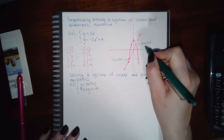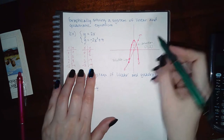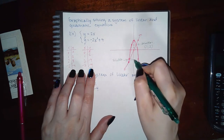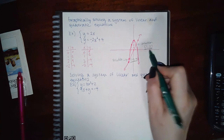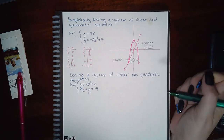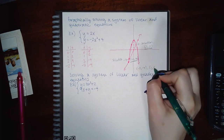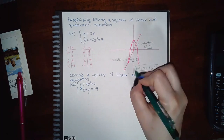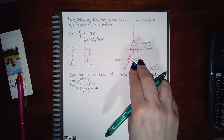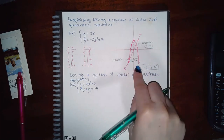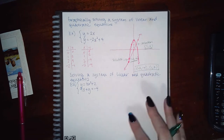The two graphs share the point (1, 2) and also the point (negative 2, negative 4). So the solutions to the system are both of these points. If you need to type them into ALEKS and separate them with a comma, that's how you enter your answers. ALEKS will ask you to graph both equations, then ask for the solution or solutions.